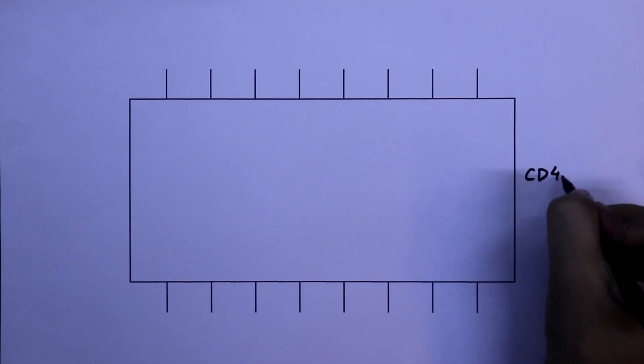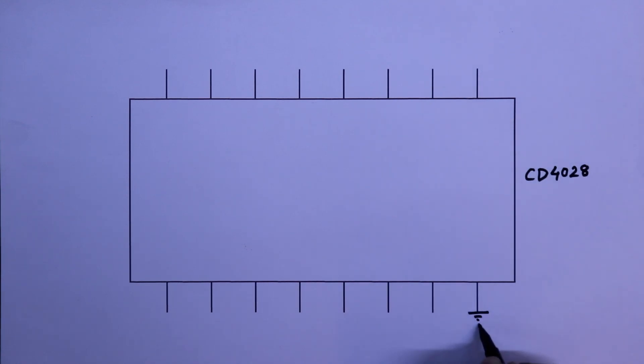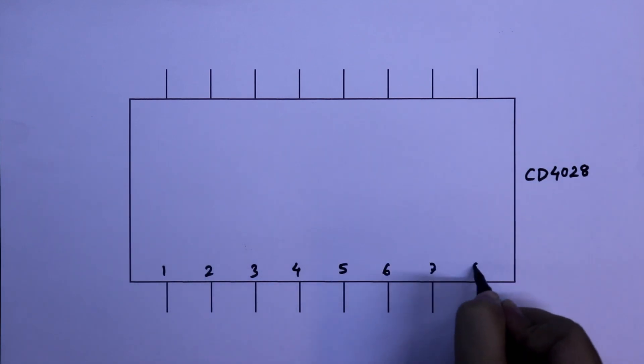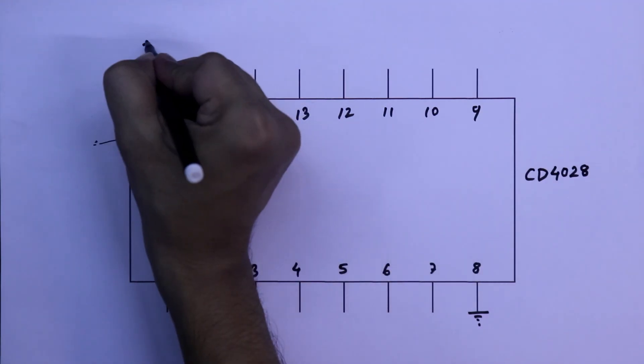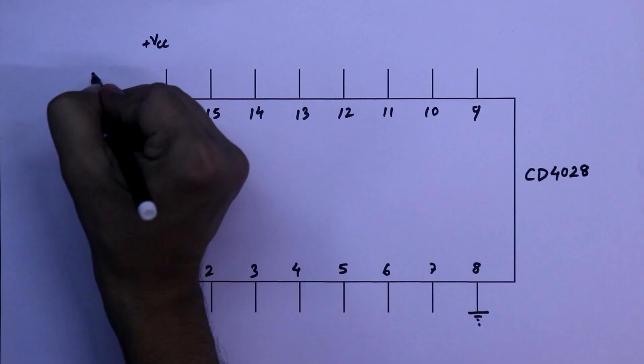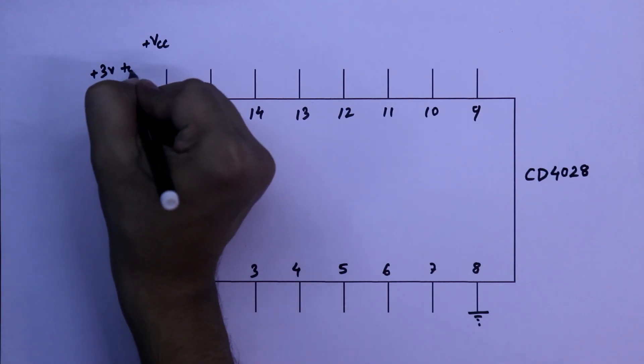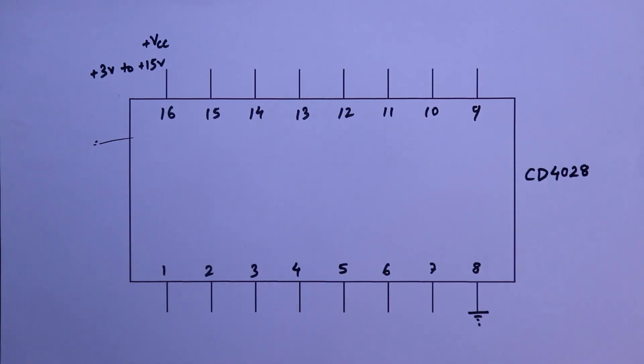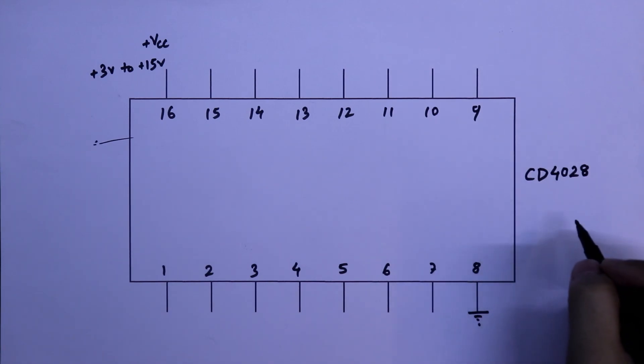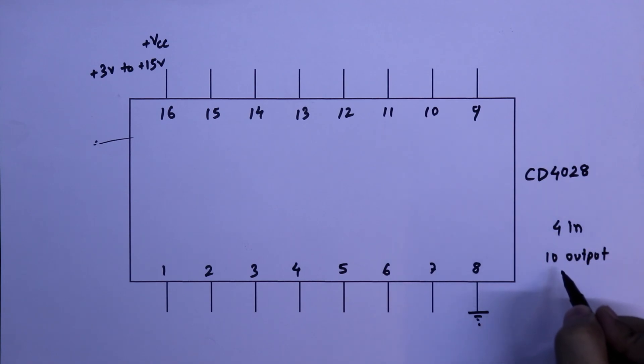Now see its pin diagram. Pin number 8 is ground pin. It has 16 pins. Pin number 16 is plus VCC. We can supply from 3V to plus 15V. As it is BCD to decimal converter, BCD means binary coded decimal, so it will have 4 inputs. And to decimal converter, that means it will have 10 outputs.